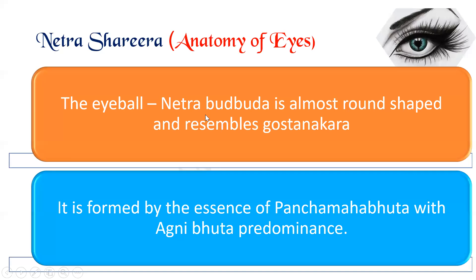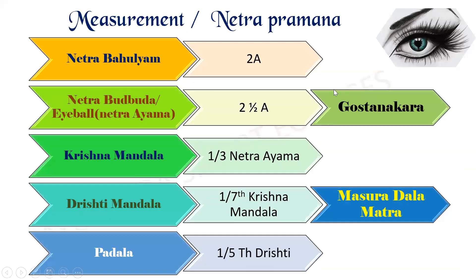The eyeball, also called Netra Budbuda, is almost round in shape, resembling Gostanakara. It is formed by the essence of Panchamaha Bhutas, predominantly Agni Bhuta. Regarding Netra Pramana measurements: Netra Bahulyam is 2 Angula, and Netra Budbuda — that is, Netra Ayama — is 2 and a half Angula.